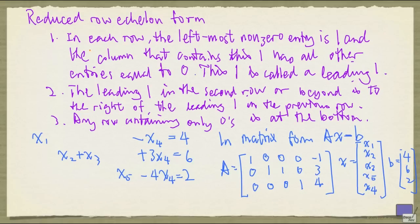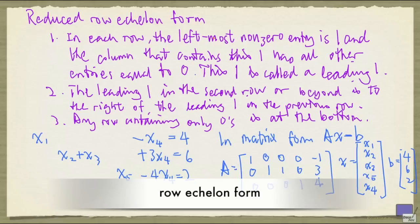Now, if a matrix satisfies all these, except the first one partially, that is, if the column containing the leading one only has entries below it to be equal to 0, but not necessarily those that are above it, then it is said to be in row echelon form, without the word reduced.